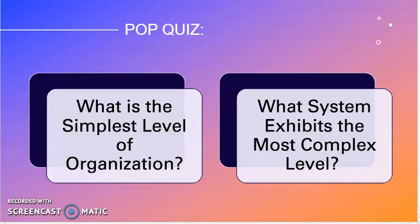Time for a pop quiz. What is the simplest level of organization? That would be the chemical level. What system exhibits the most complex level? That would be our nervous system. Thank you. Have a nice day.